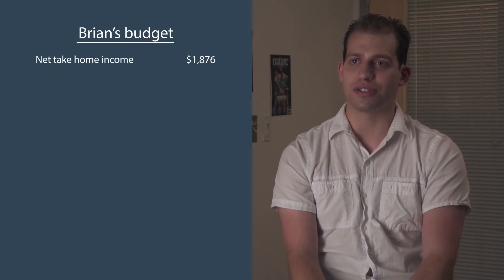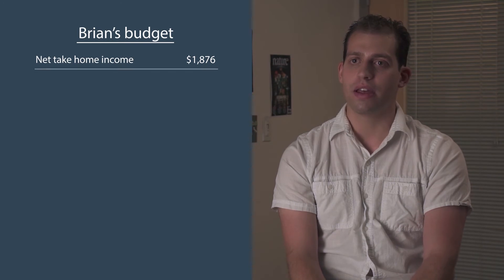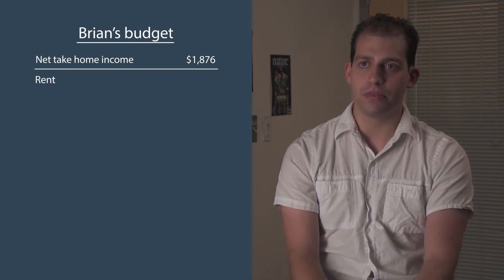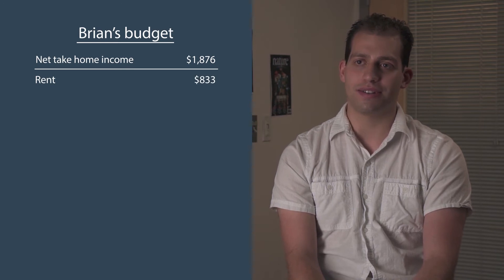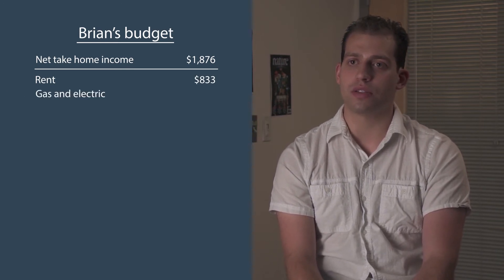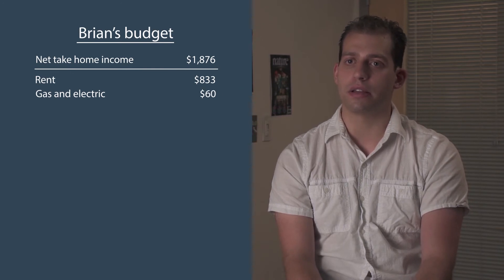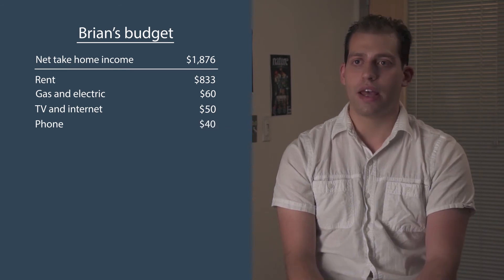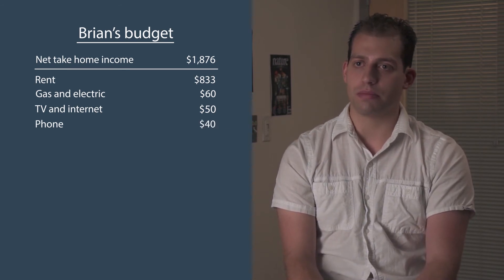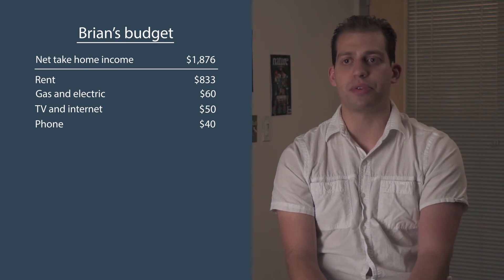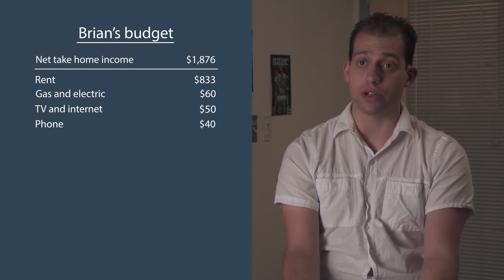My rent is $2,500, which, if you split it between three people, is $833.33 a month. And my gas and electric comes out to about $60, depending upon the month. TV and internet is $50, and my phone bill is about $40. And for my student loans, thanks to scholarships and family support, as well as having a few jobs throughout undergrad, I have no loans.